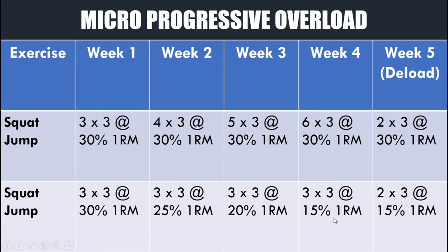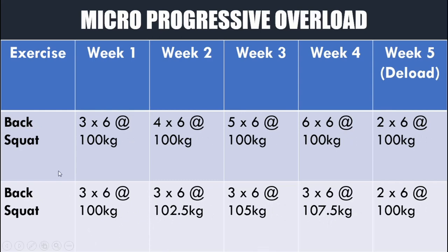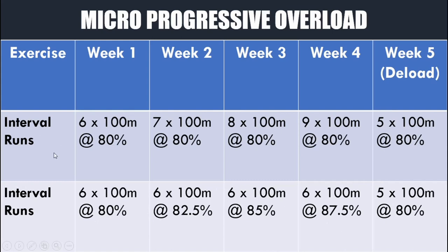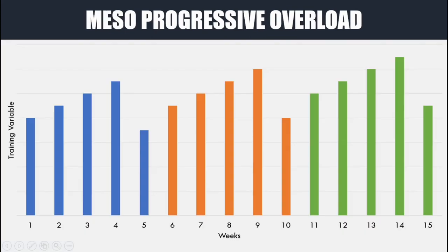If we increase the load we decrease the velocity, and if we decrease the load we increase the velocity — so depending on what's more specific to your sport, this could go either way. For a strength exercise like a back squat, the accumulation approach is three sets of six, four sets, five sets, six sets maintaining the same load; for intensification we maintain three sets of six throughout and slightly increase the load each week. For an endurance exercise like interval runs, we may do six sets of 100m at 80% of best, progressing to seven, eight, nine sets — or alternatively maintain the sets and distance but slightly increase speed each time, increasing intensity while maintaining volume. As always, the deload week is easier than previous weeks.